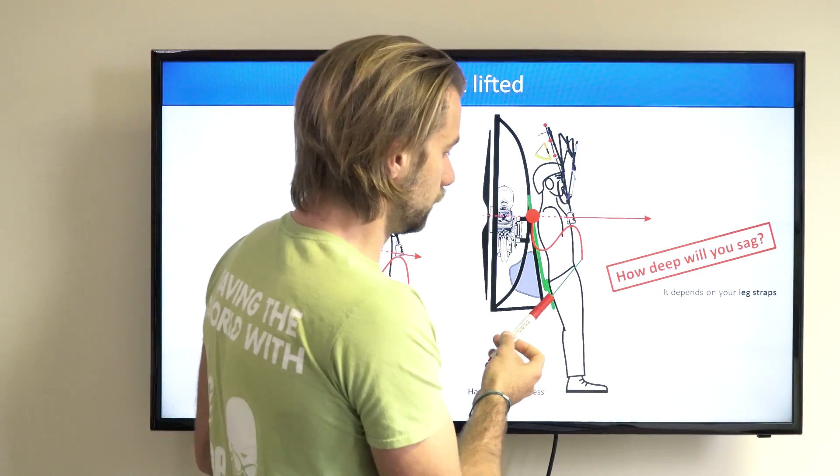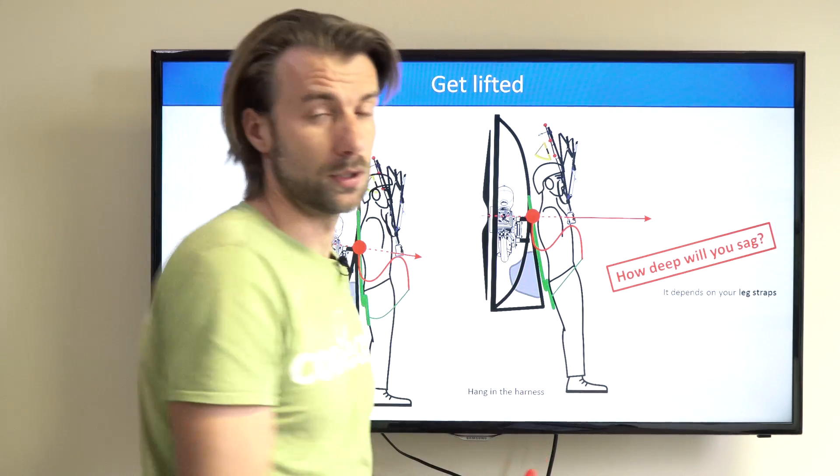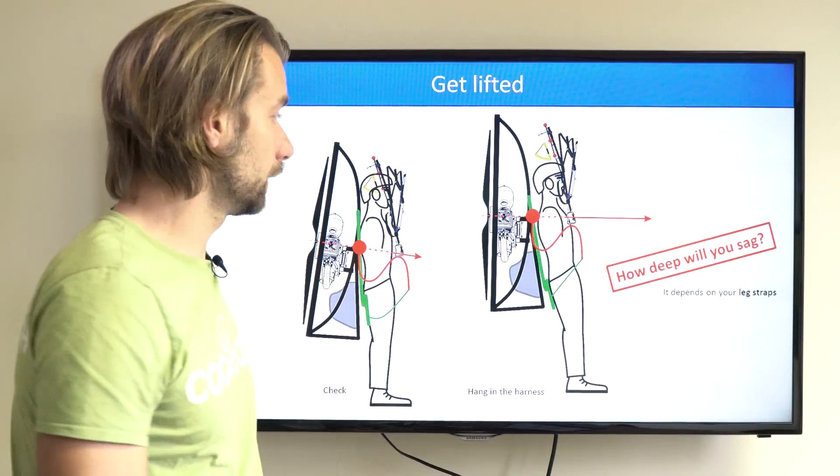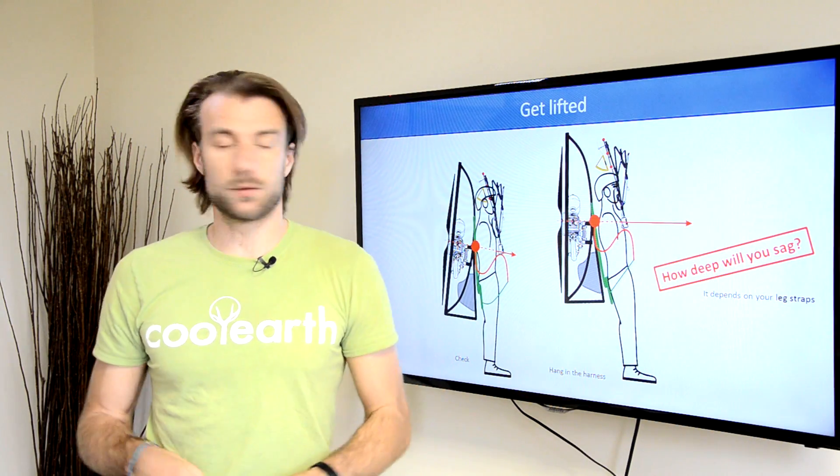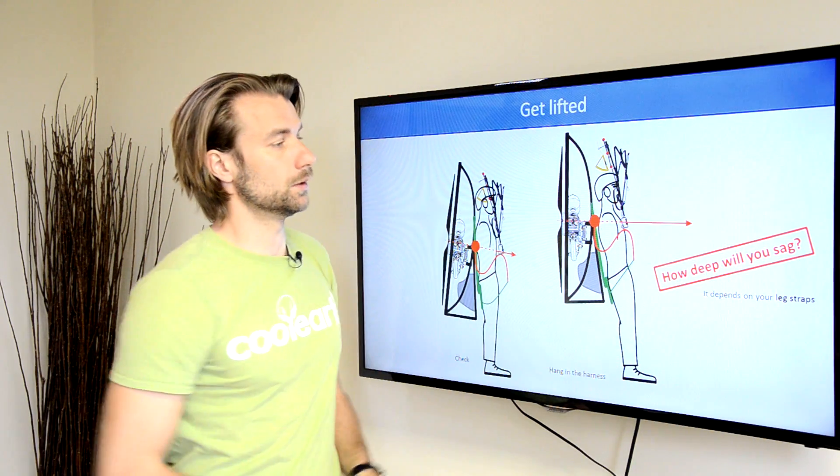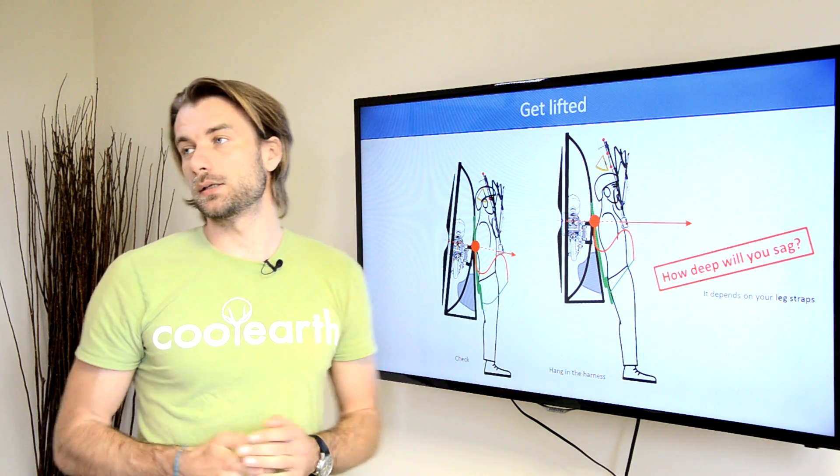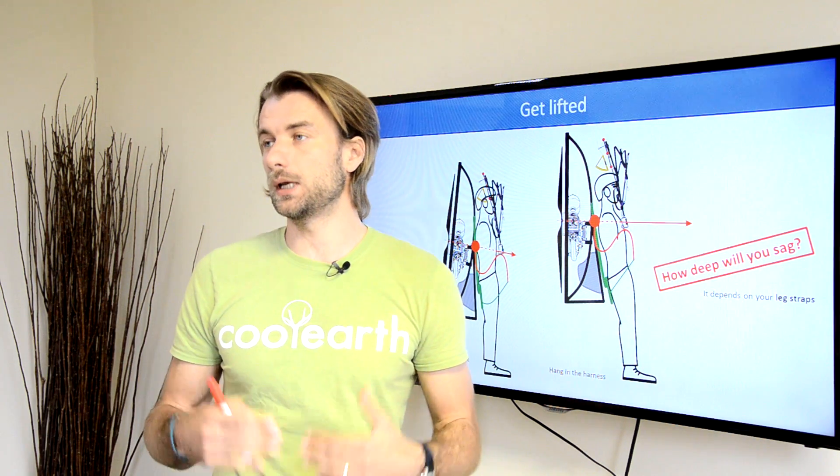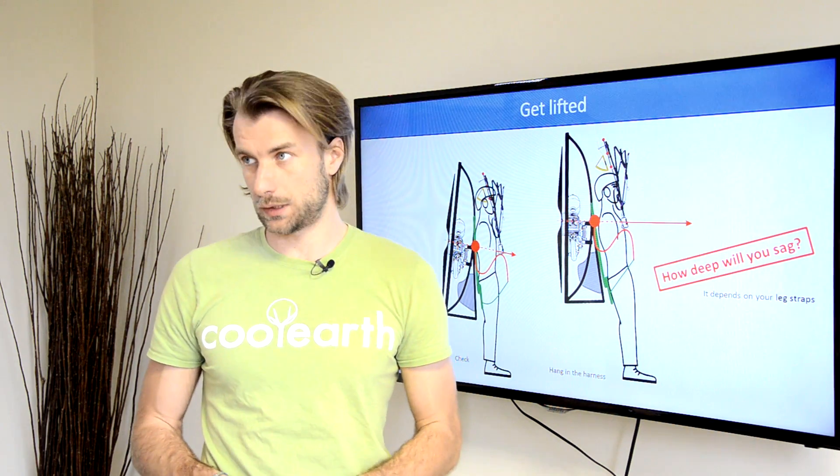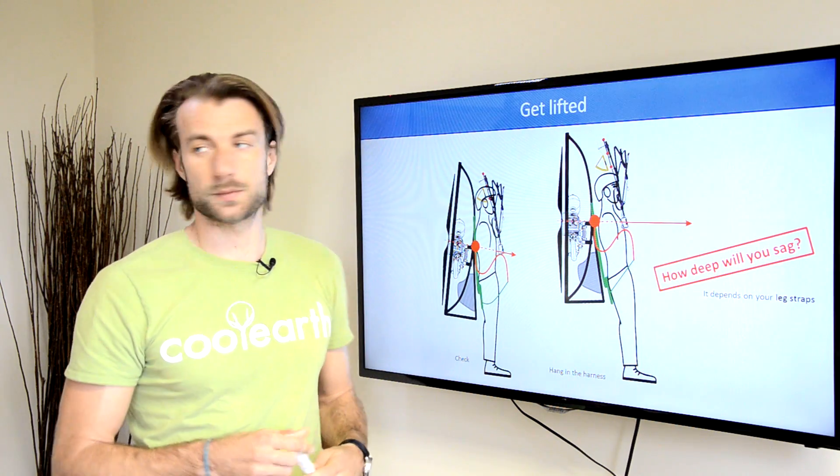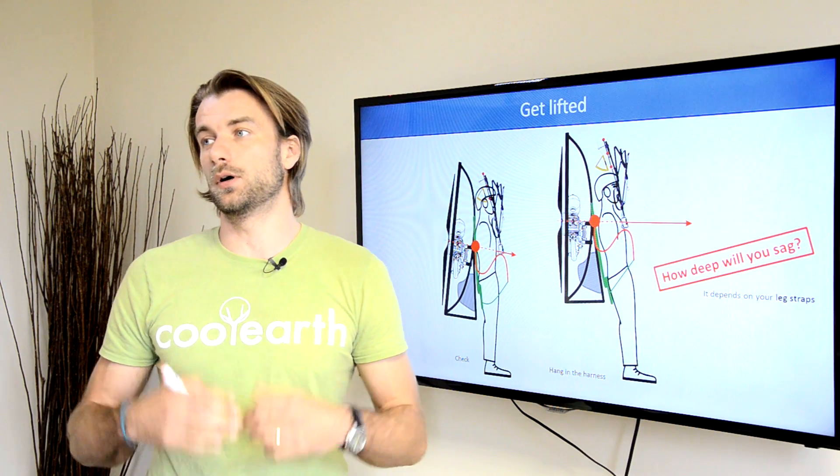Getting the seat board locked will not allow the bar to come up, although the seat board is already applying pressure on the back of my legs. Now the question how deep you're gonna sag in the harness and that depends on the position and length of your leg straps.